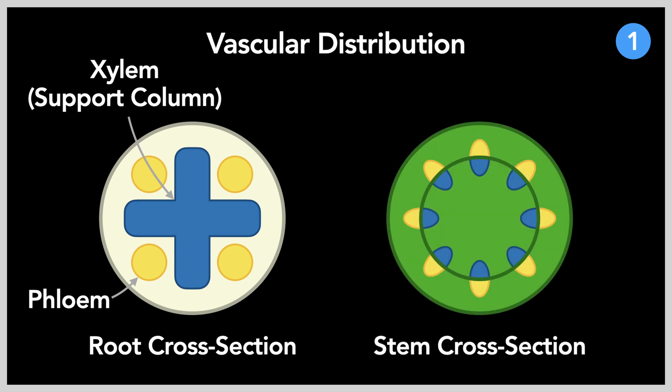In plant stems, the xylem and phloem are grouped together, with the xylem vessels on the inside and the phloem tubes on the outside, as shown in this cross-section. Each of these units, consisting of one xylem tube and one phloem tube, is called a vascular bundle.